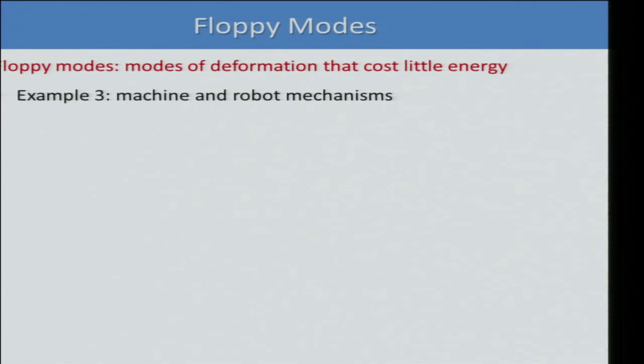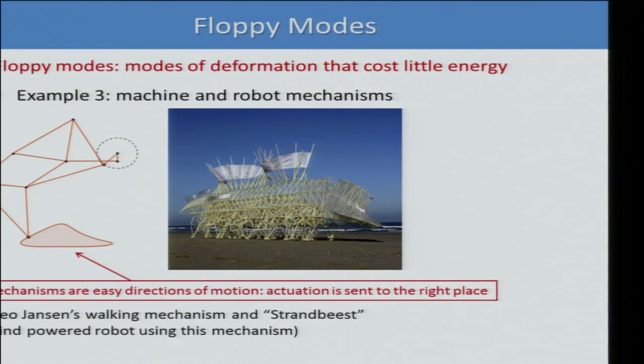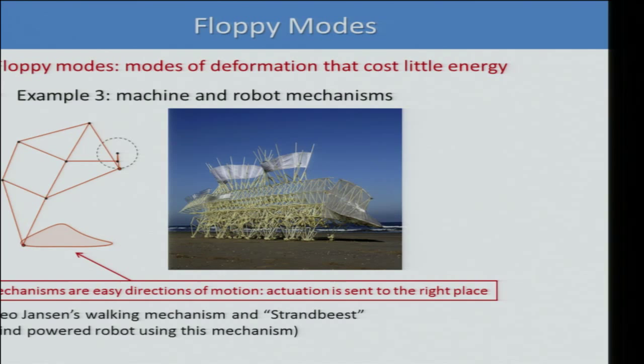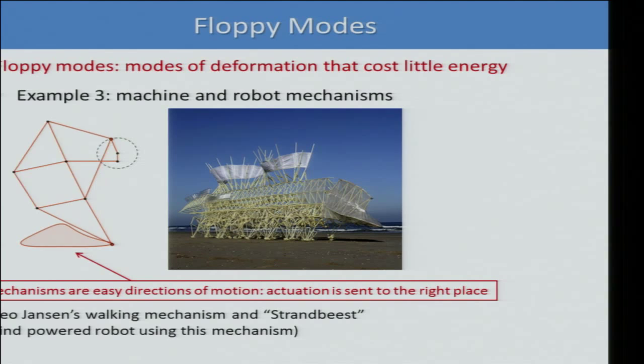Let me show one last example of why floppy modes are interesting — machine and robot mechanisms. Here is a simple example of a robot mechanism designed by Dutch artist Theo Jansen for walking. This structure has only one floppy mode — the mechanism used to direct actuation to the correct part. If you actuate the motion on this circle, you can make the robot walk. This is artwork that walks by wind power on a sand beach.